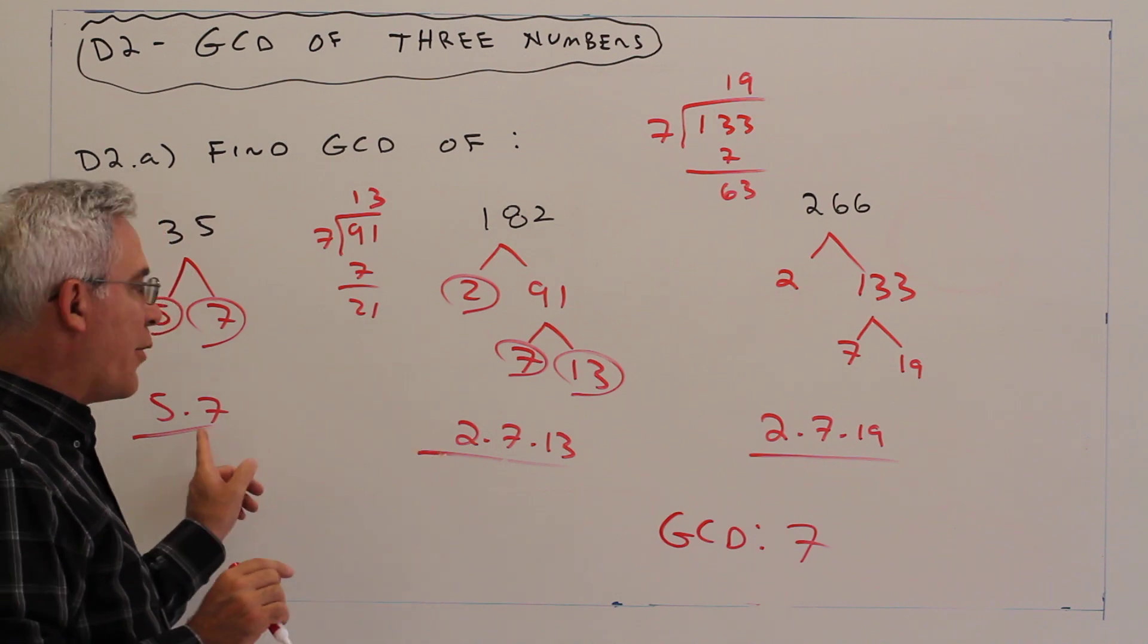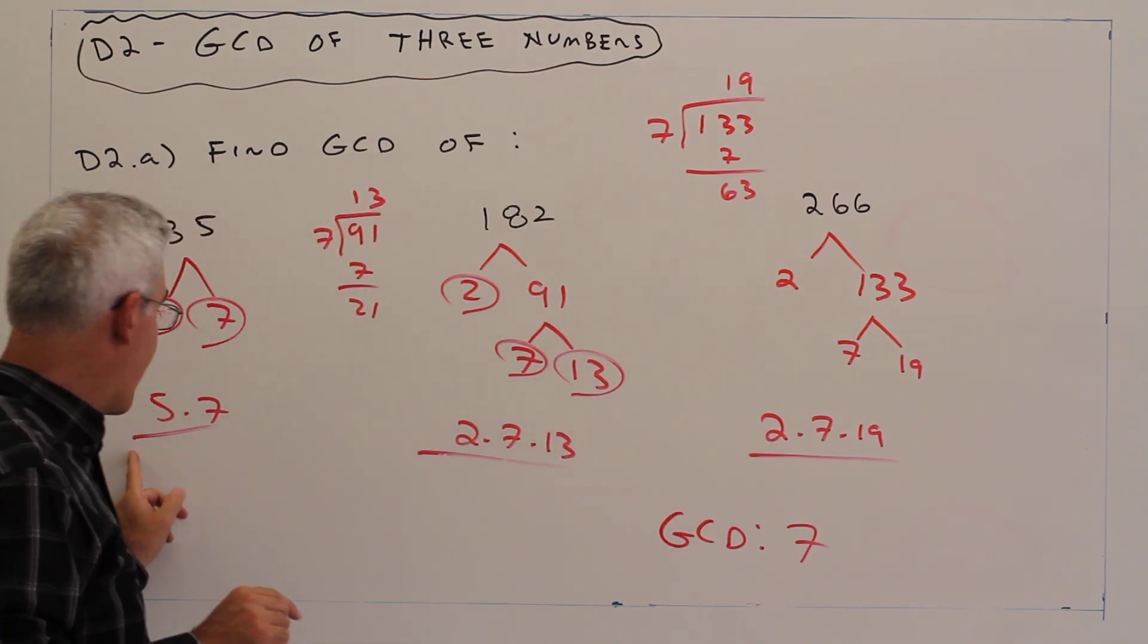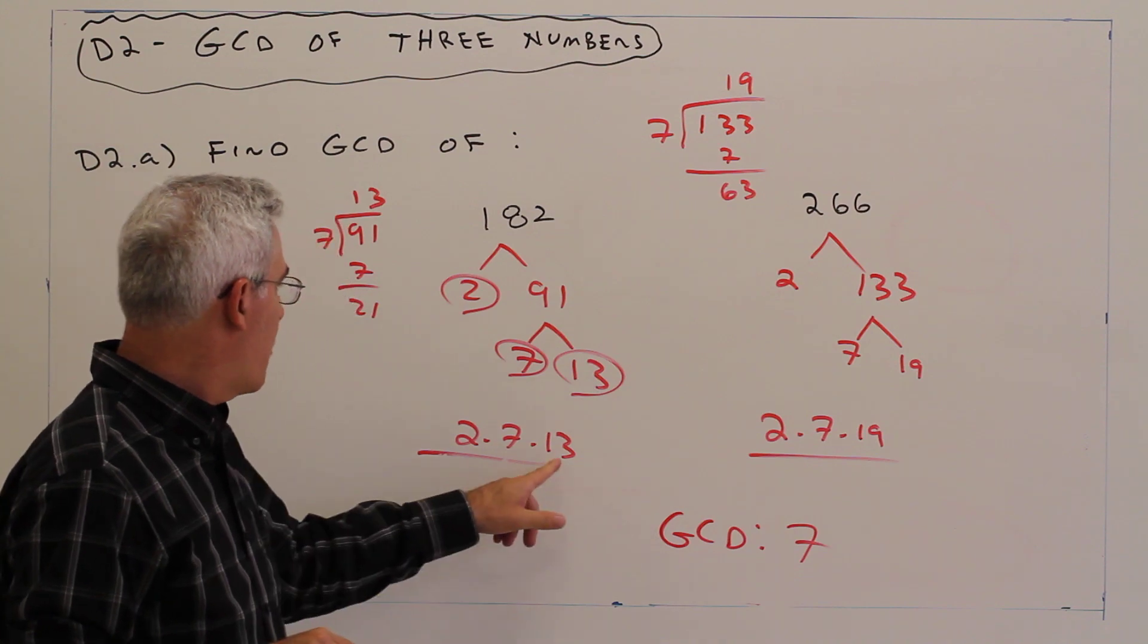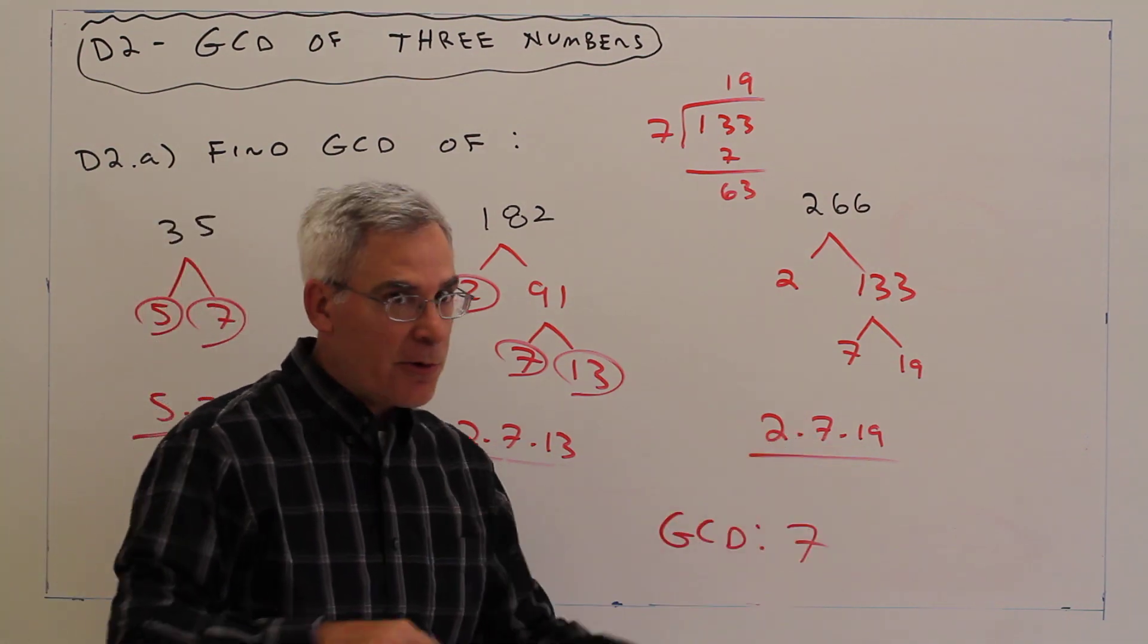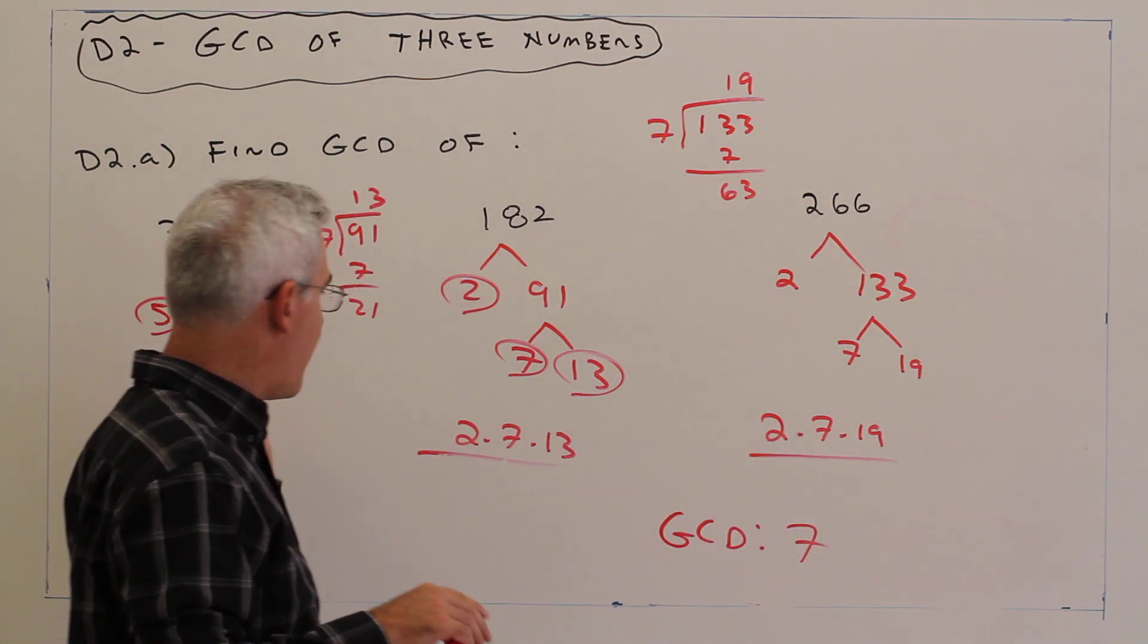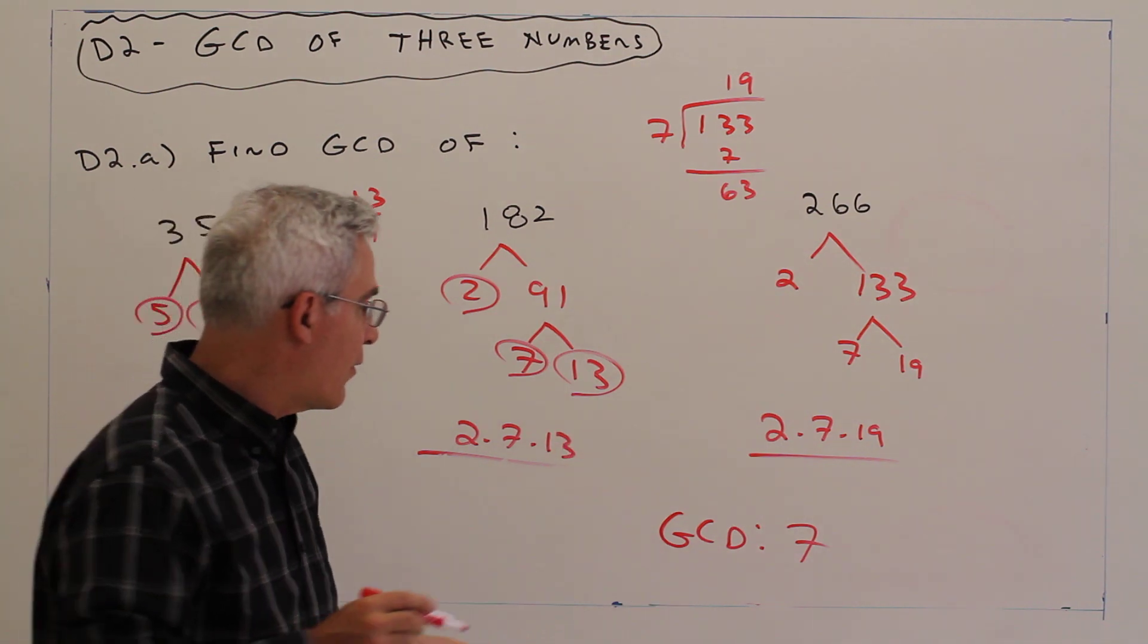One 2, no 2s. Even though there's a 2 there, there's not a 2 there, don't report a 2. One 13, no 13s, no 13s. One 19, no 19s. I'm done. Greatest common divisor is 7.